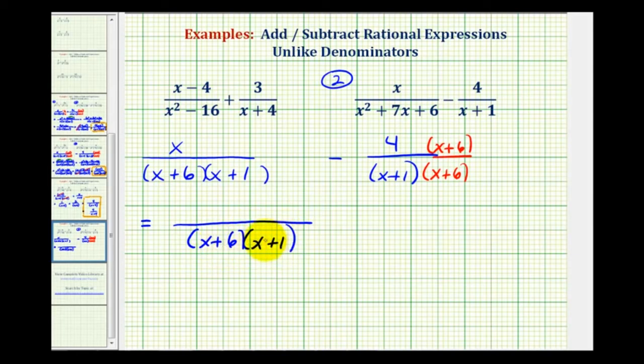Remember we can write these factors in either order because it would not affect the product. And now in the numerator, we have x minus four times the quantity x plus six.